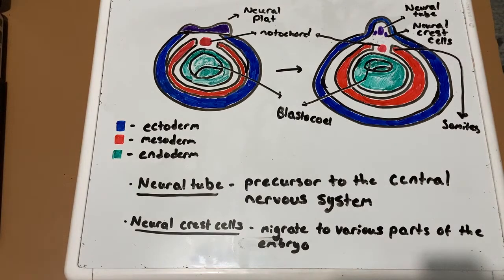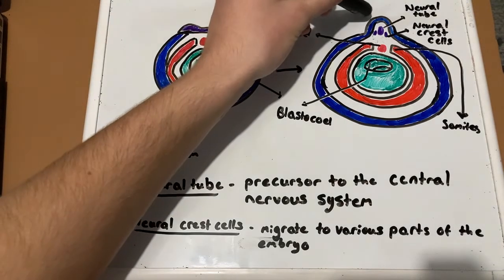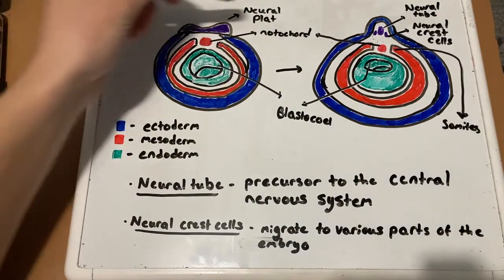Parts of the notochord become part of the vertebrae discs, and it is important to note that eventually the notochord will not be present anymore, which occurs before birth. Changes in cell shape cause the neural plate to curve inward, which will then curve into the neural tube, as seen right here.